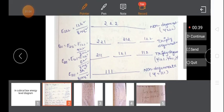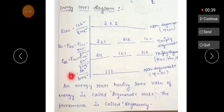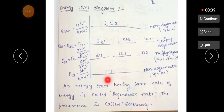The example is E111, where nx = 1, ny = 1, nz = 1. So nx² + ny² + nz² = 1² + 1² + 1² = 3. The energy value is 3h²/8mL². This is a non-degenerate state, as there is only one combination possible.